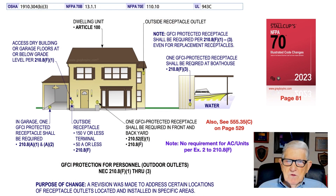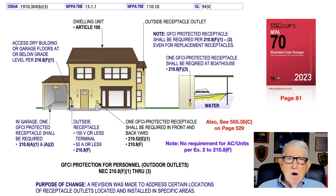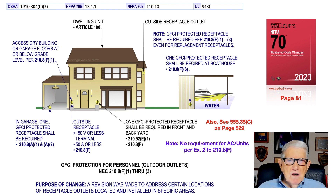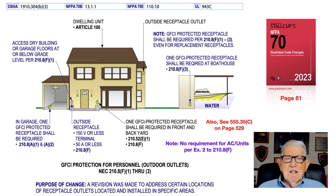This illustration deals with GFCI protection for personnel for outdoor outlets. This gives you a general overview of specific locations where GFCI protection is required — such as inside the garage, crawl spaces, unfinished basements, and similar areas. This particular illustration deals with outside receptacles, including a receptacle on a boat dock near water. You can read more about this in 555.35C on page 529 of the NEC.